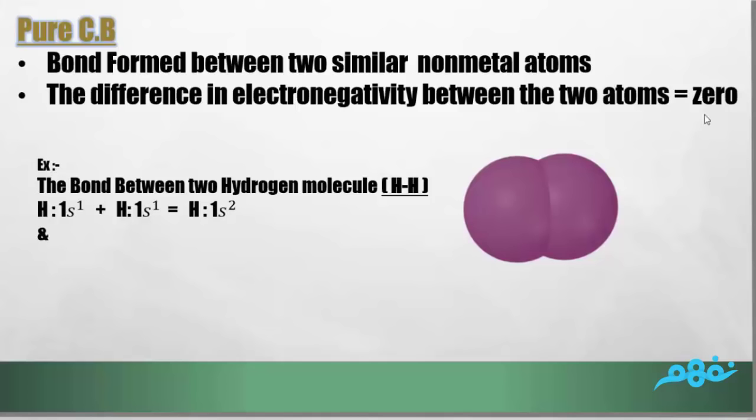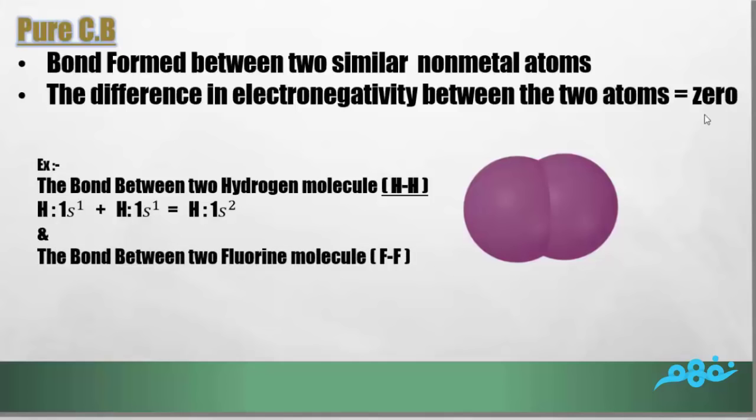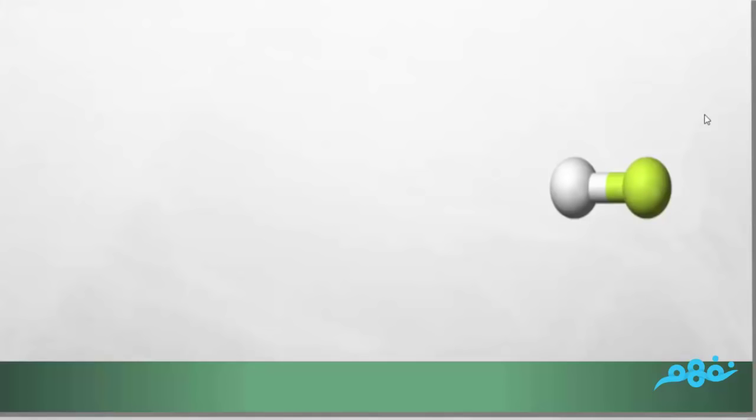The same applies to the fluorine molecule, F₂, which is formed from two fluorine atoms. Now let's move to the second type of covalent bond, which is the non-polar covalent bond.